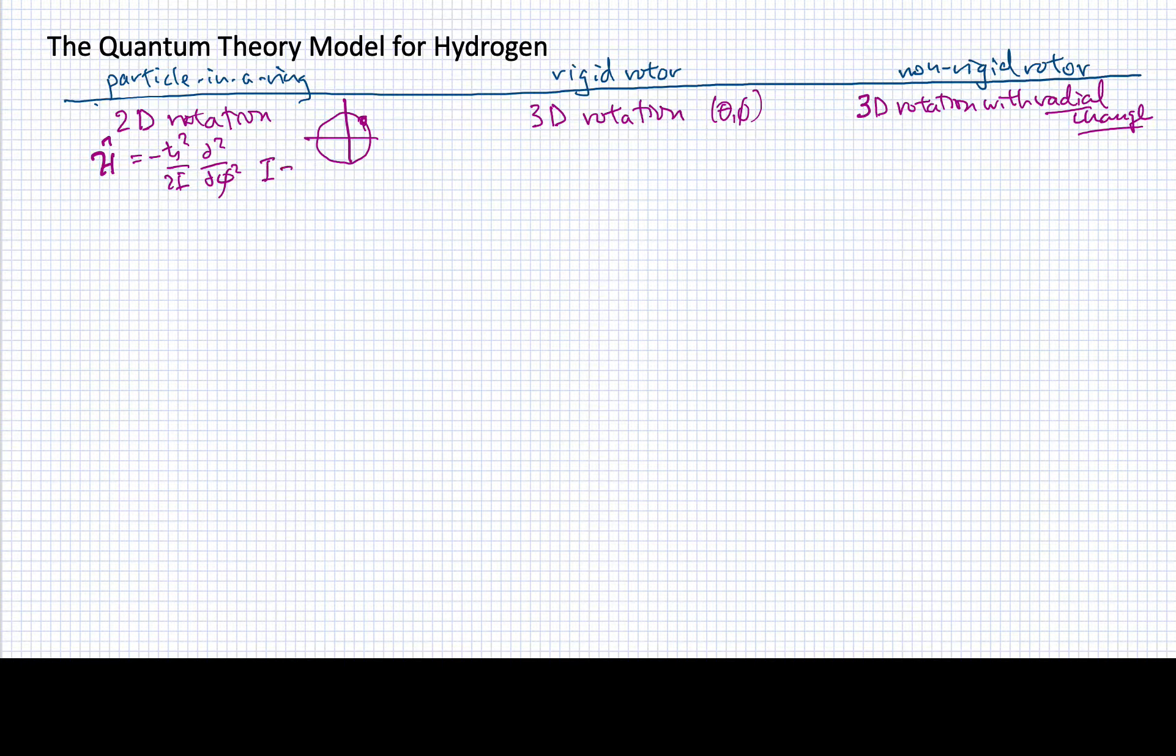Our i was the moment of inertia, which was the mass of the particle times its radius squared. When we went to the rigid rotor, our Hamiltonian could be written as 1 over 2i times the angular momentum squared.